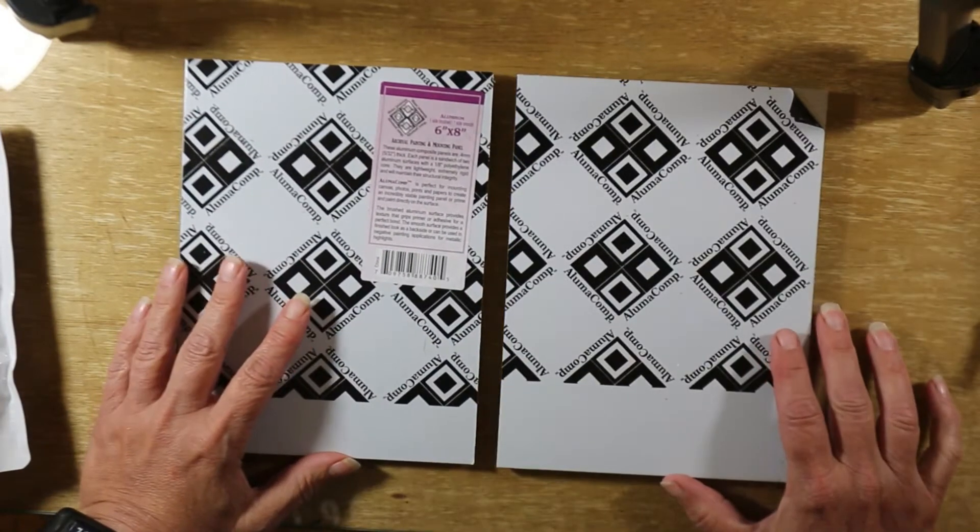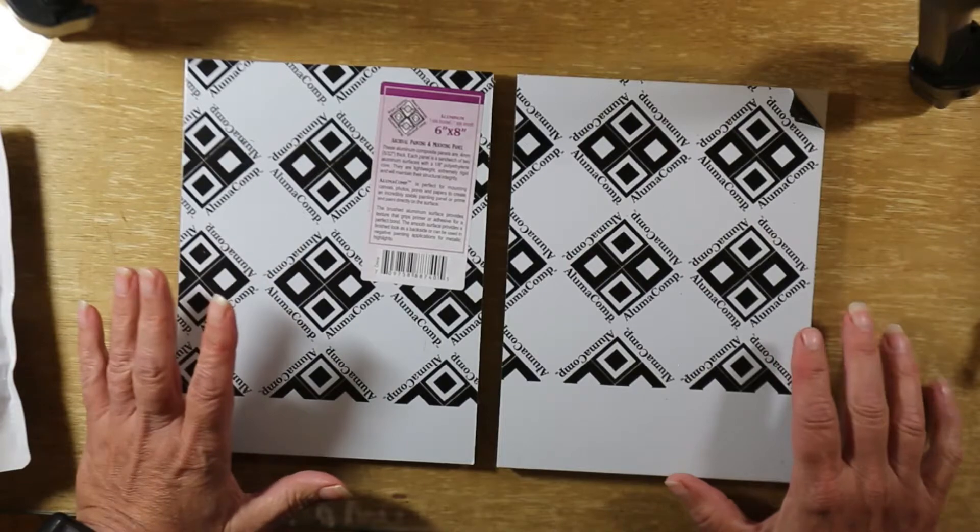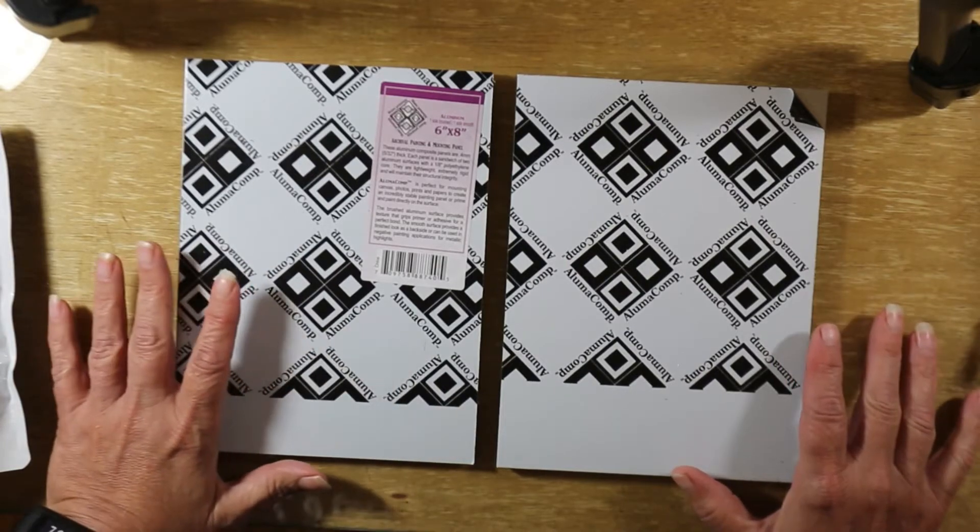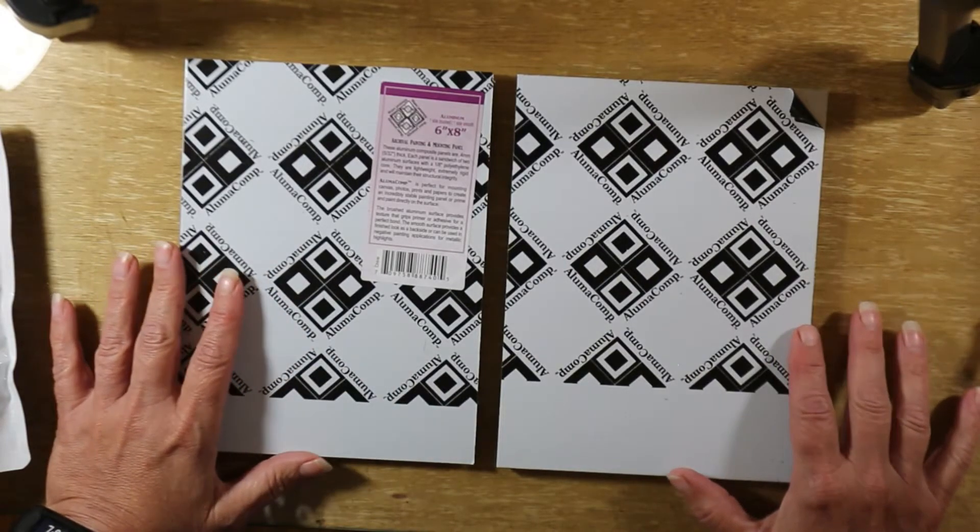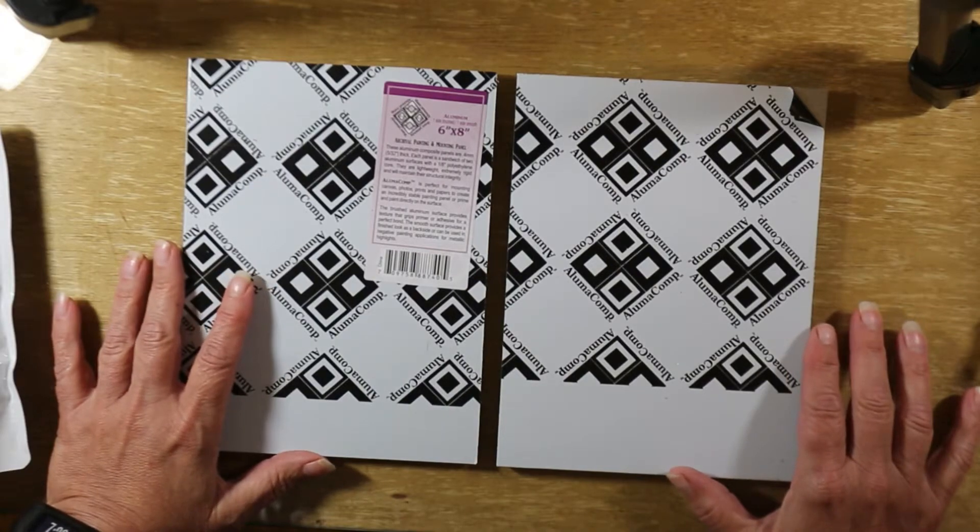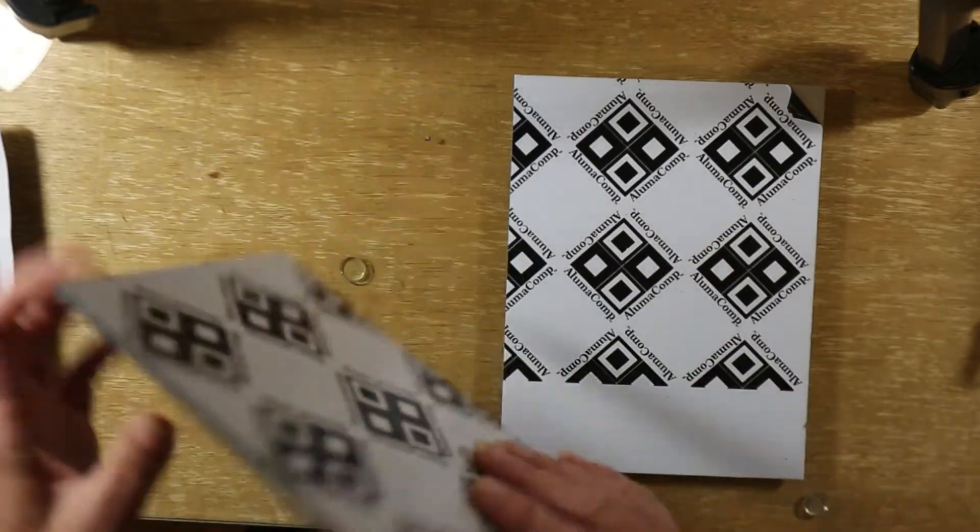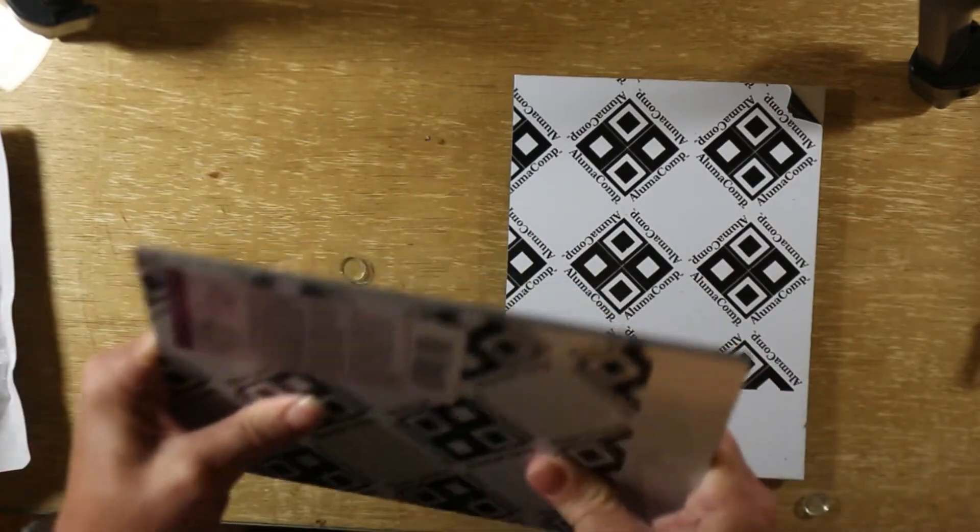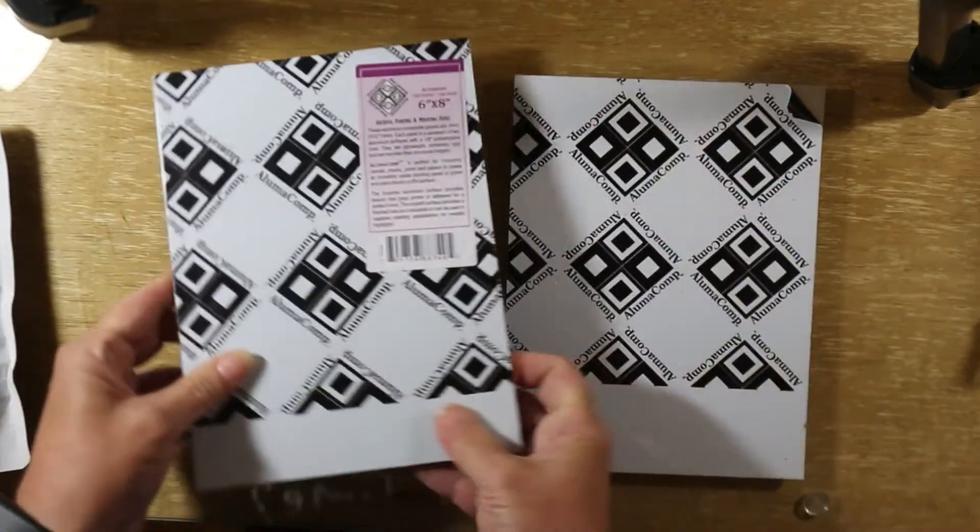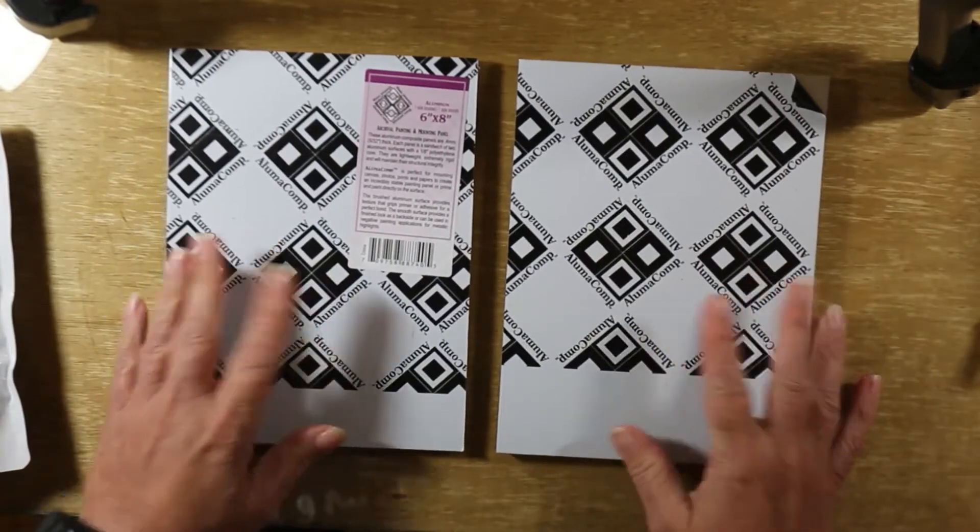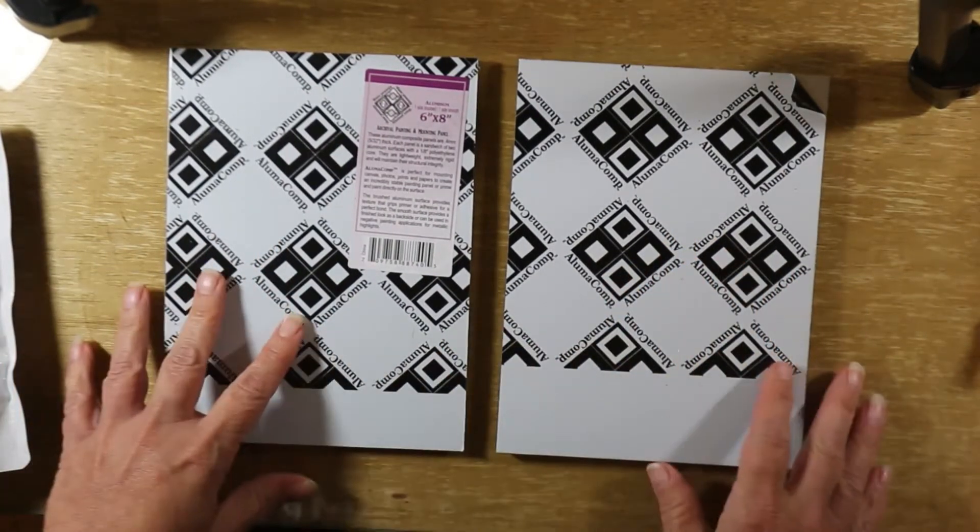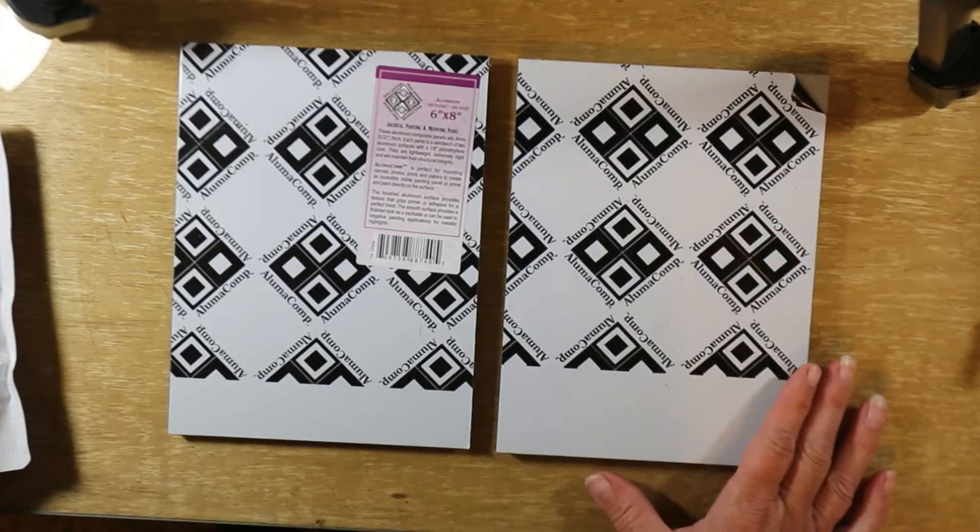I don't like to stretch paper, like to have it on a hard panel and we won't get into all the reasons why tonight, but I'm having trouble finding panels that make me happy. So we're going to try this. These are Luma Comp panels. They're real thick. I mean, I could probably stand on this thing. These are just six by eight. I bought three different ones just because I wanted to try them out before I really committed to this system.